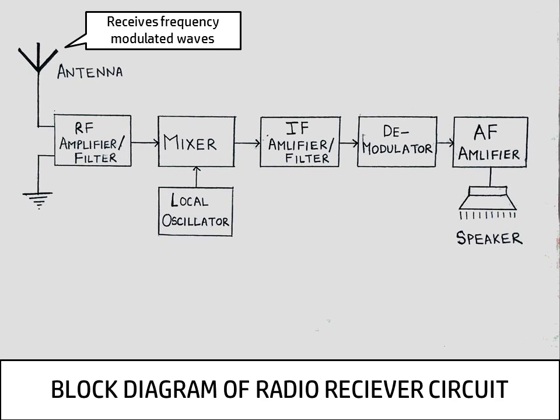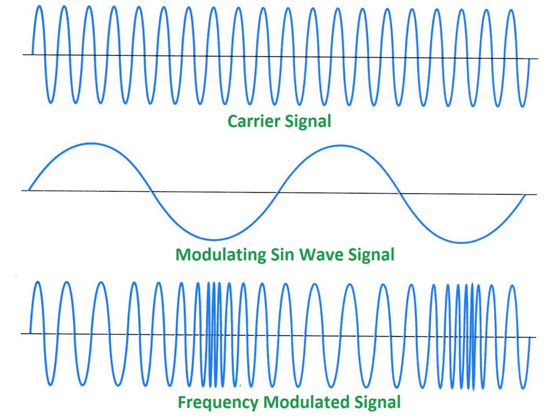Okay, I'll come to that. So as you can see in this, we have in the middle the modulating sine wave signals. These are the radio waves which are actually intended to be transmitted. But these are of so low frequency that they are prone to be disrupted by the surrounding frequencies. So to prevent this, we merge them with high frequency waves. These waves are called carrier signals and the result is a frequency modulated signal which is of high frequency and contains the radio signals that we wanted to transmit.